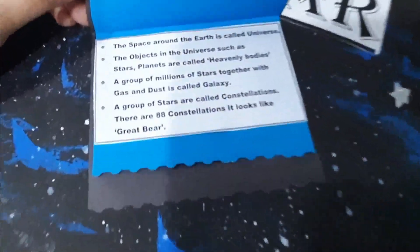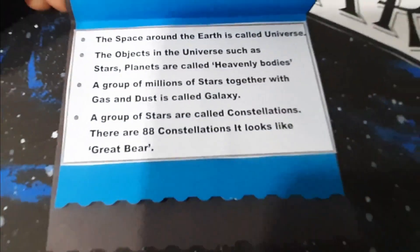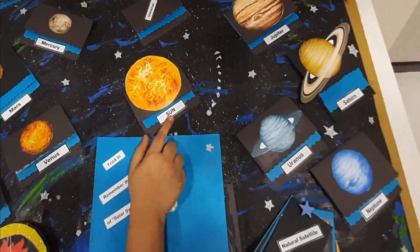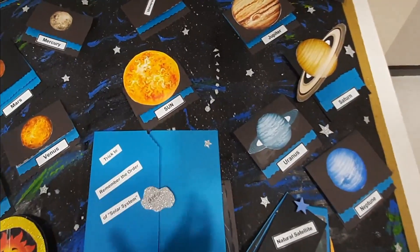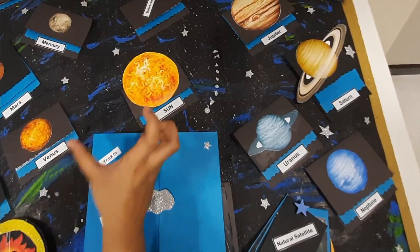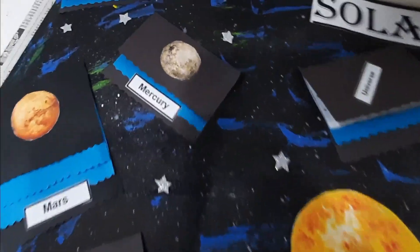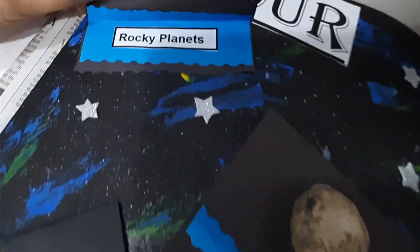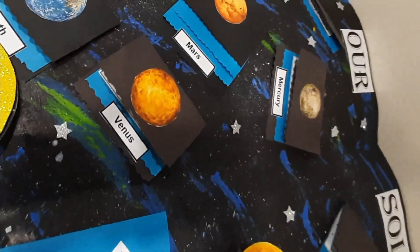The space around the Earth is called our universe. This is the Sun, and it is a star located in the center of the solar system. There are two types of planets: rocky planets and gas planets.